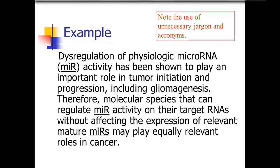Also note the use of unnecessary jargon and acronyms in this passage. We get the term 'gliomagenesis,' which is just a fancy way to say the formation of glioma — there are more direct ways to say that. We also get an interesting acronym: the authors abbreviate microRNA as MIR. It's a little amusing because RNA is already itself an acronym, so the authors have made an acronym of an acronym.